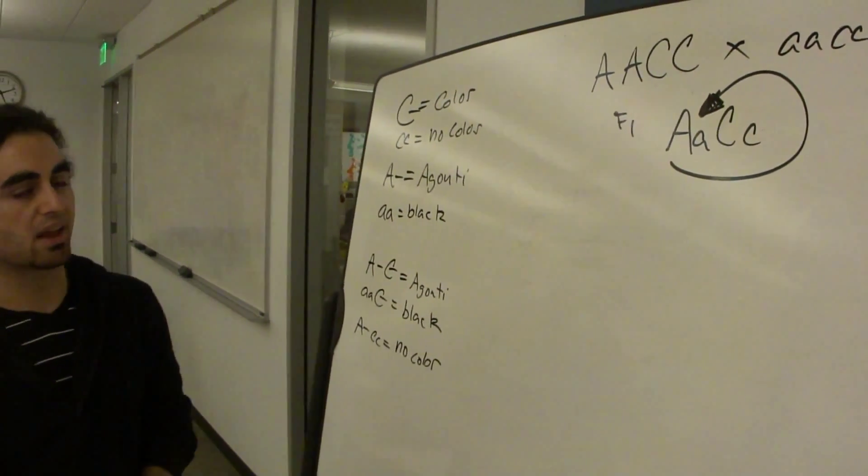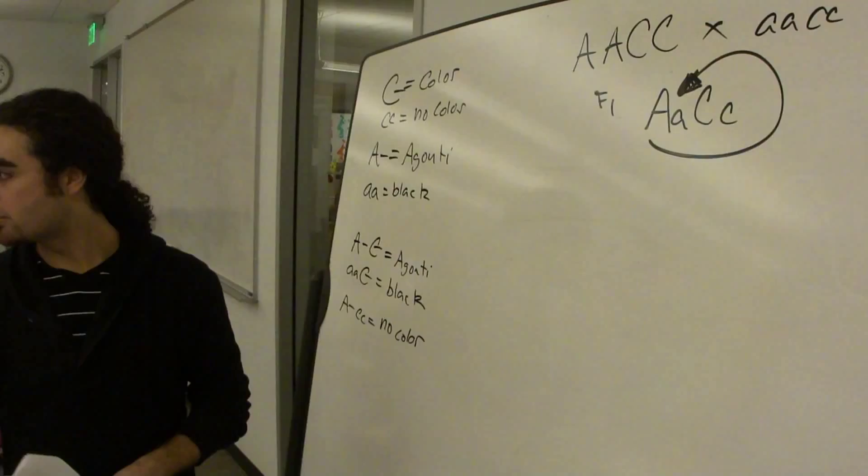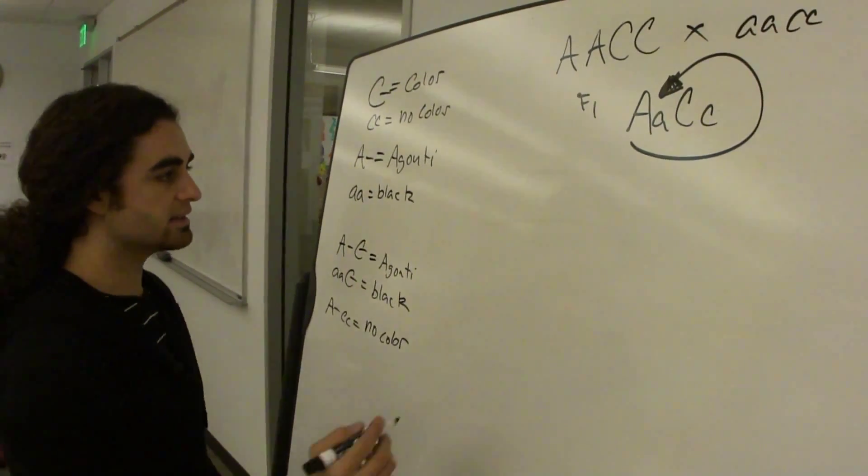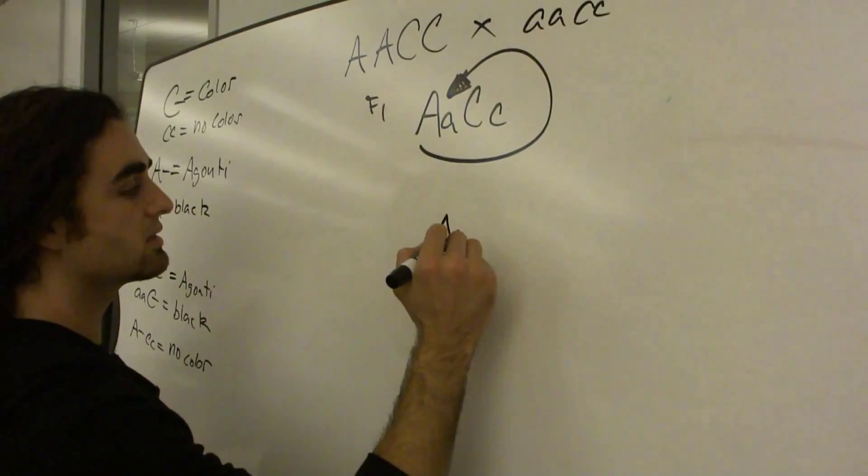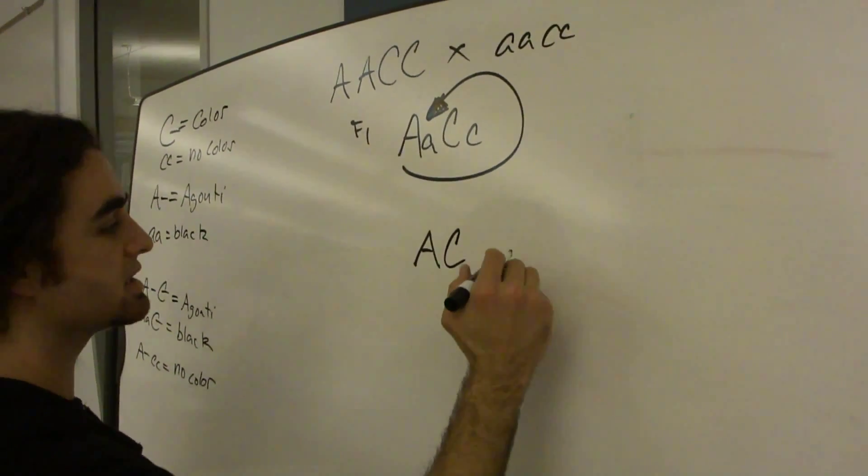And this is whenever we do our classic dihybrid cross, right? So we're going to get 16 cells. We're going to do all of our possible gametes here.